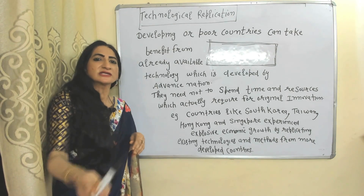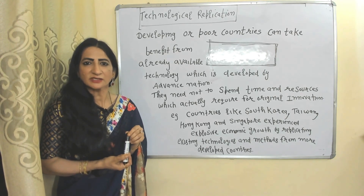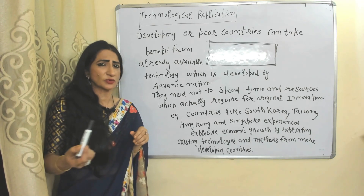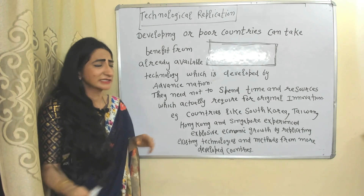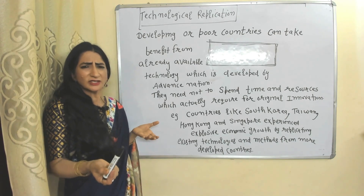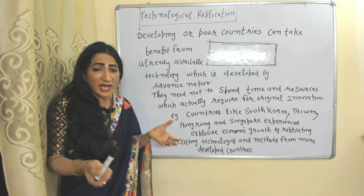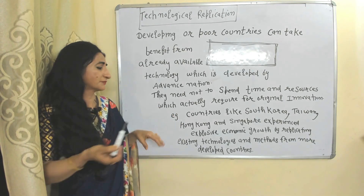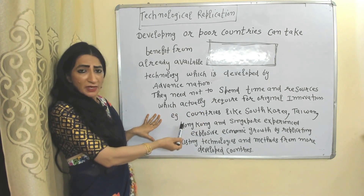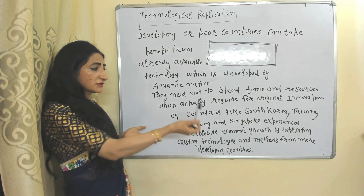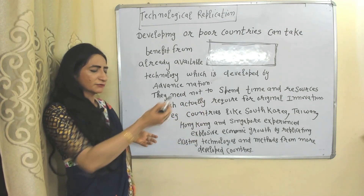Because poor countries copy technology from advanced countries, they don't need to spend as much time and resources as required for original innovation. For example, countries like South Korea, Taiwan, Hong Kong, and Singapore experienced explosive economic growth by replicating existing technologies and methods from advanced countries.